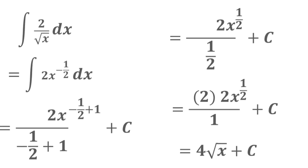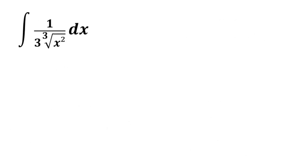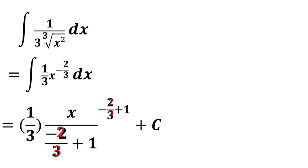Another example: find the integral of 1 over 3 times the cube root of x squared dx. This is the same as 1 third x to the power negative 2 thirds dx. So the integral of 1 third x to the power negative 2 thirds dx is equal to 1 third x to the power negative 2 thirds plus 1, all over negative 2 thirds plus 1, plus c.